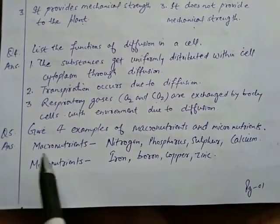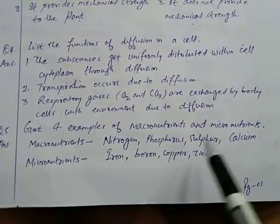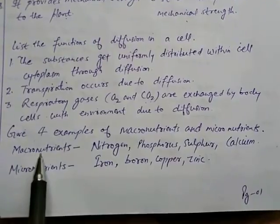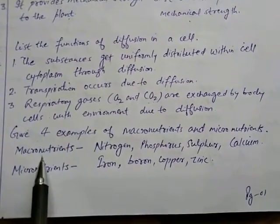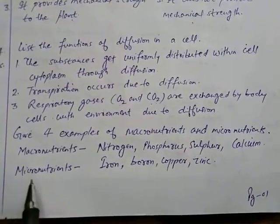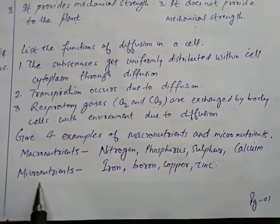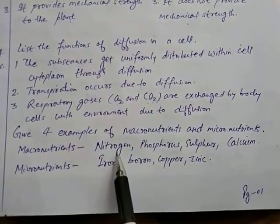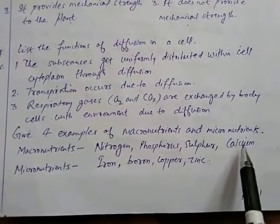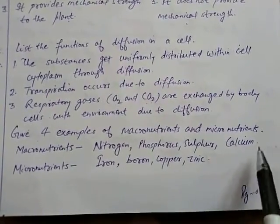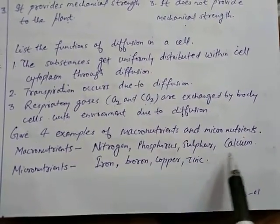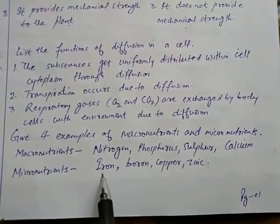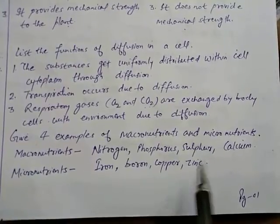Question 5: Give 4 examples of macronutrients and micronutrients. Macronutrients are nutrients required in high quantity: nitrogen, phosphorus, sulfur, and calcium. Micronutrients are required in less quantity: iron, boron, copper, and zinc.